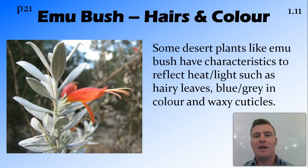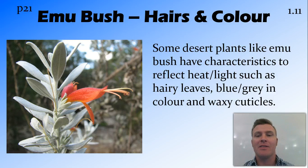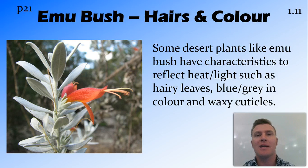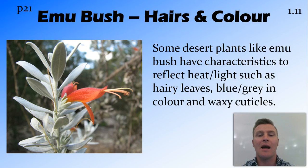Another thing that plants can do, particularly those that live in the desert like emu bush, is minimise the amount of heat they absorb into their leaves. They do this by reflecting as much heat as they can — they might have hairs on their leaves to reflect and scatter heat, or they could be a light blue or grey colour, since being lighter means they reflect more heat than they absorb. They can also have a waxy cuticle to minimise water loss.